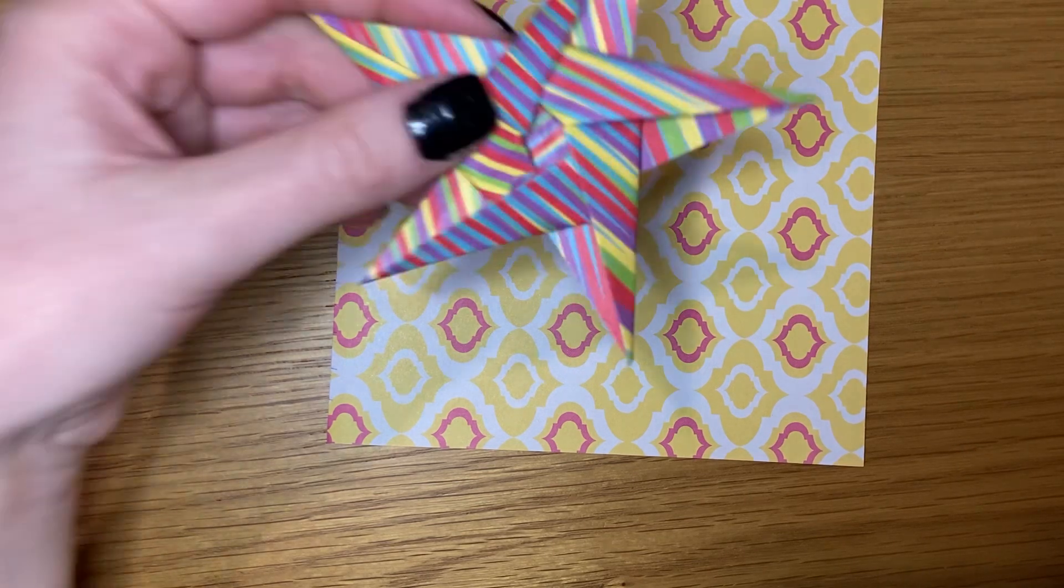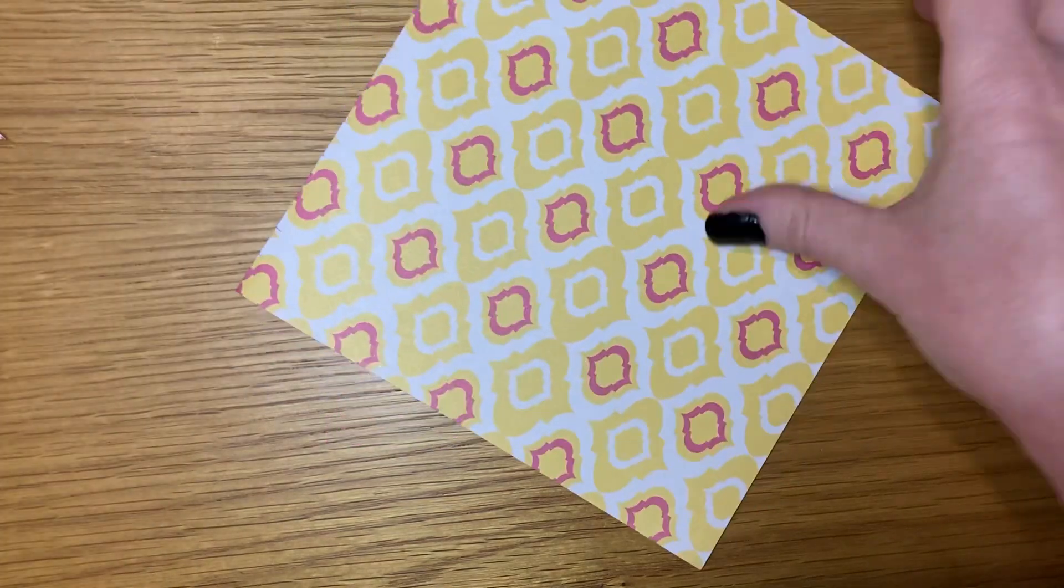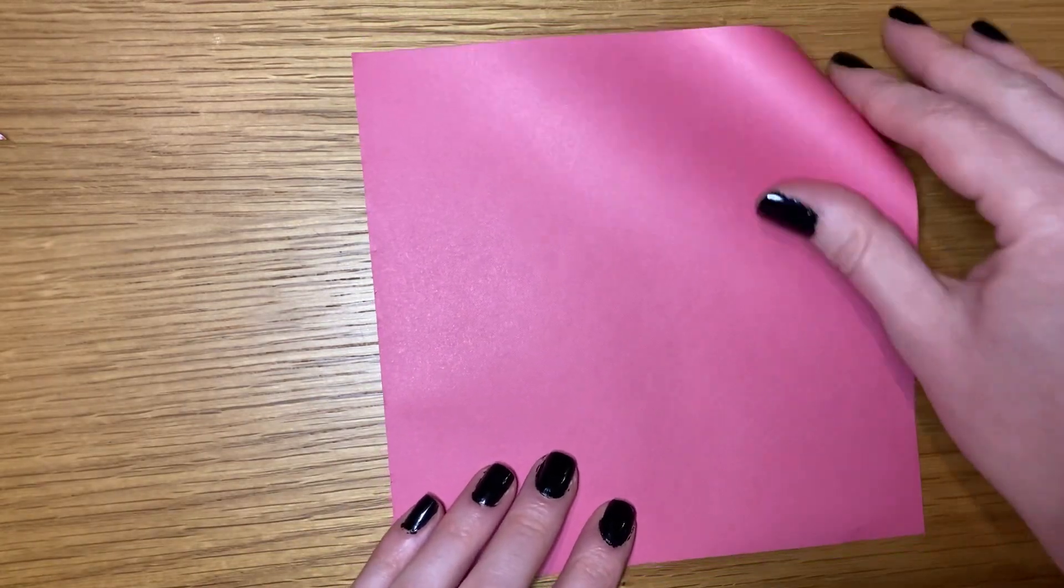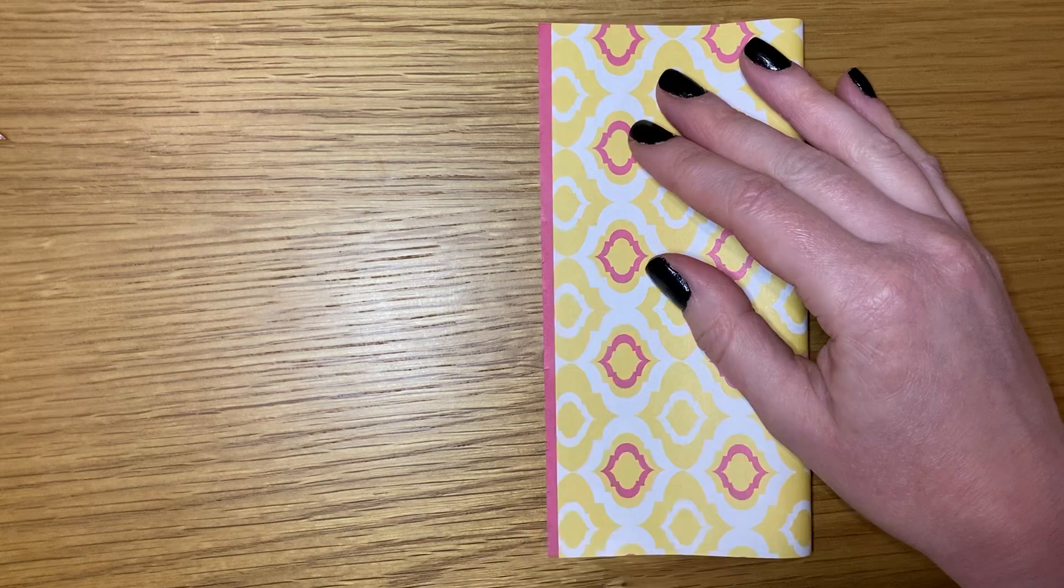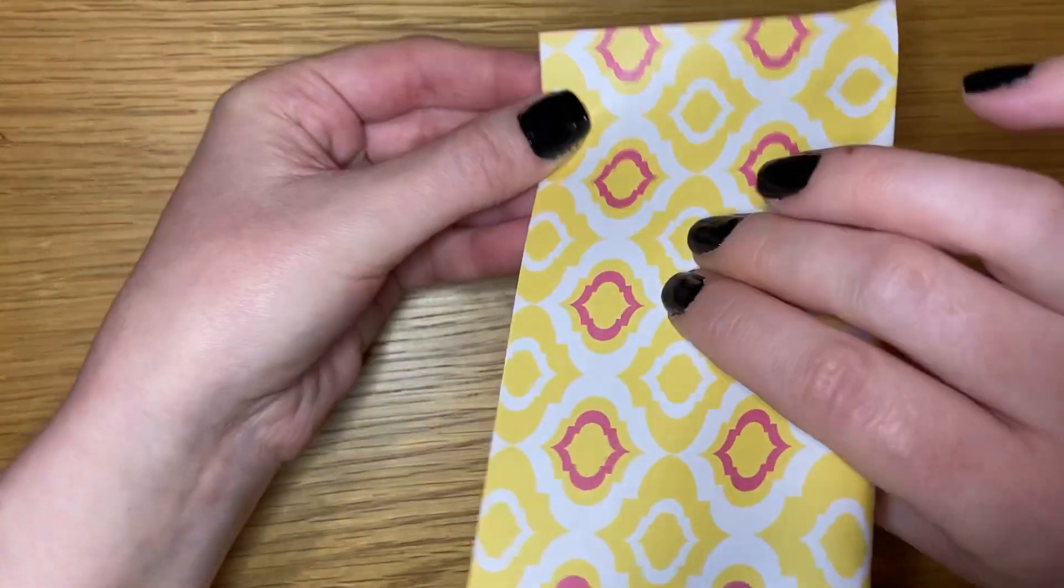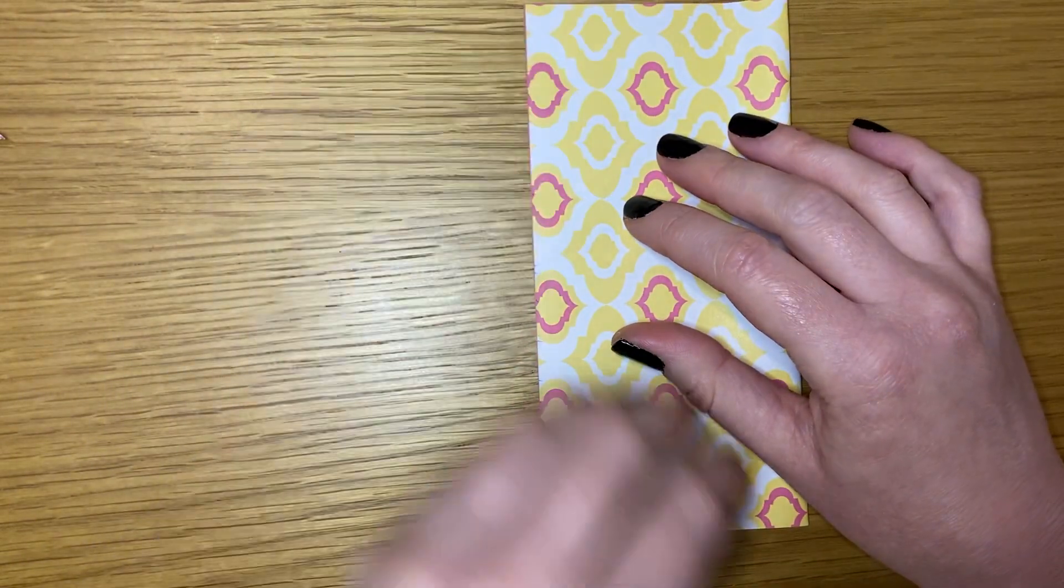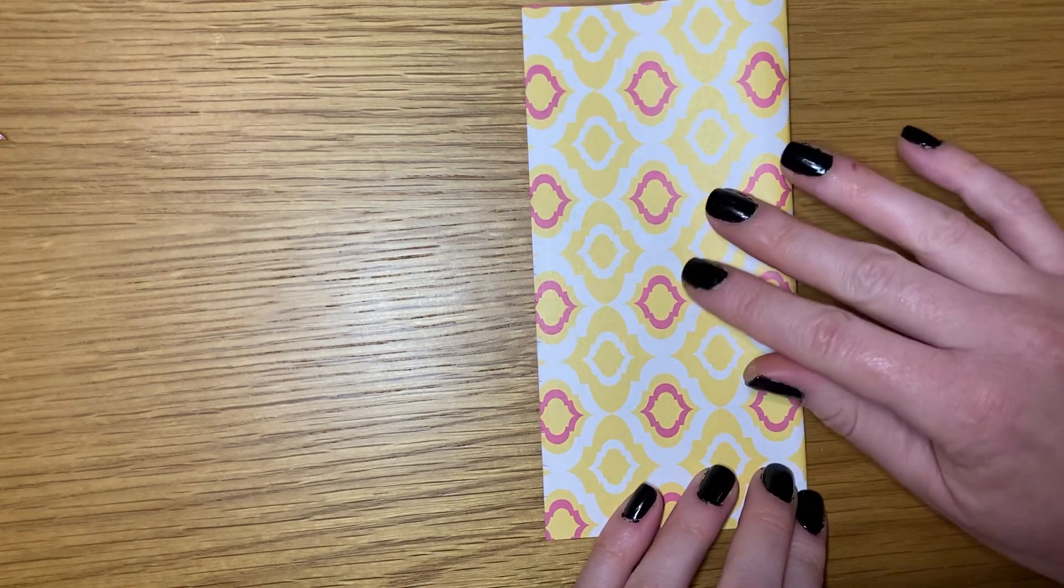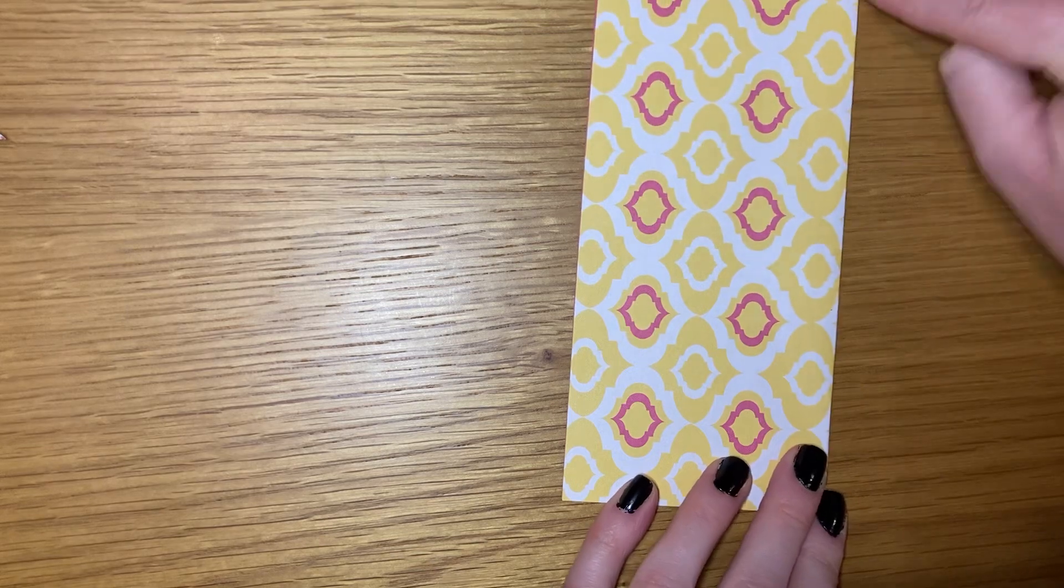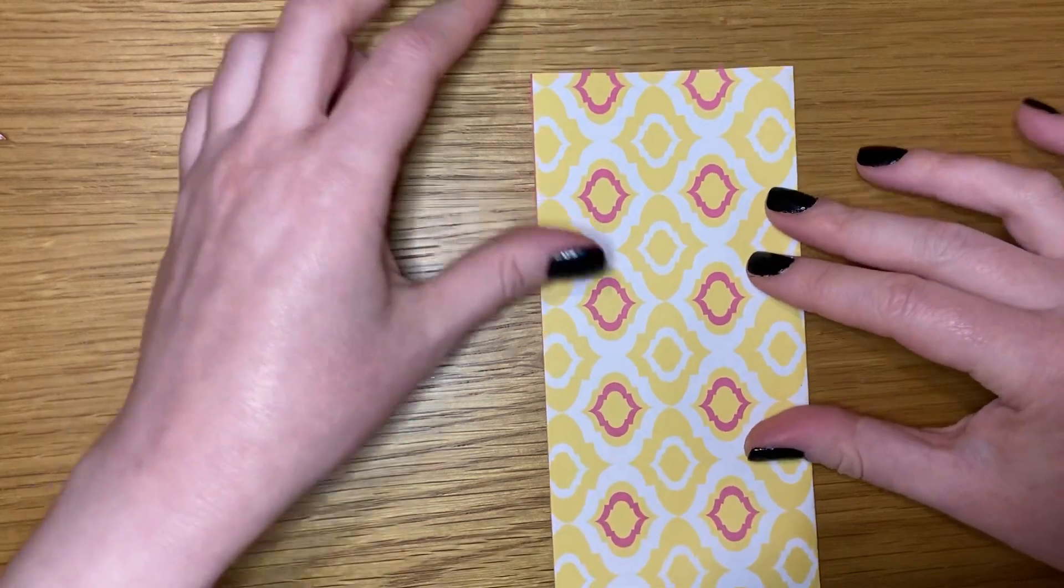Whatever color or pattern you want to be on the outside of the star when it's finished, you want face down to start. Fold our paper in half into a rectangle. We need to make sure that all our corners and edges are perfectly aligned and all our folds are precise and neat for this one, otherwise we're not going to get the right shape and it's not going to fold down nice and neat and flat at the end.